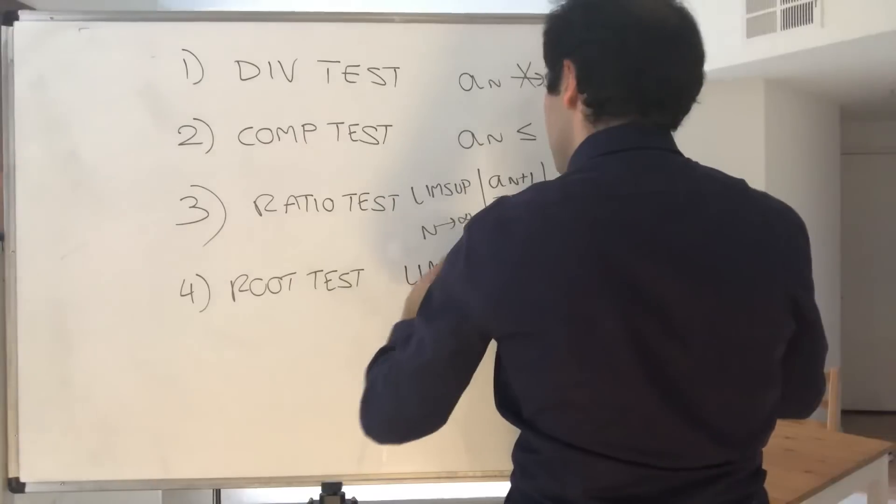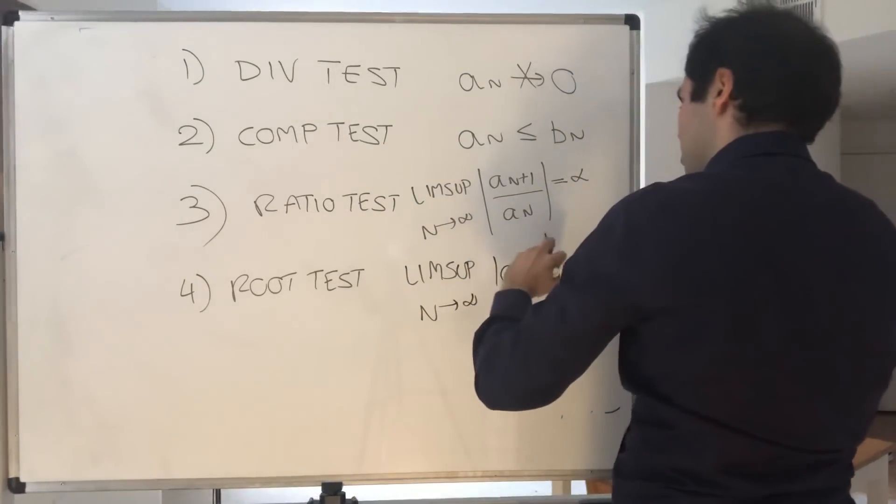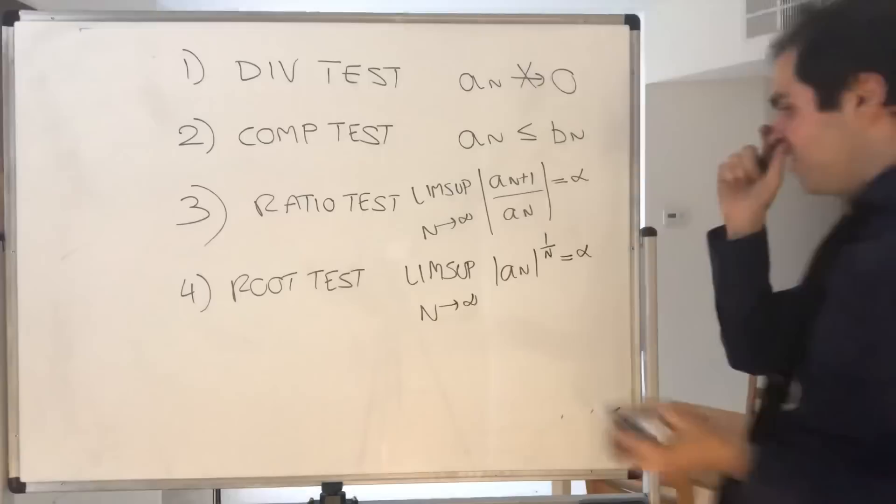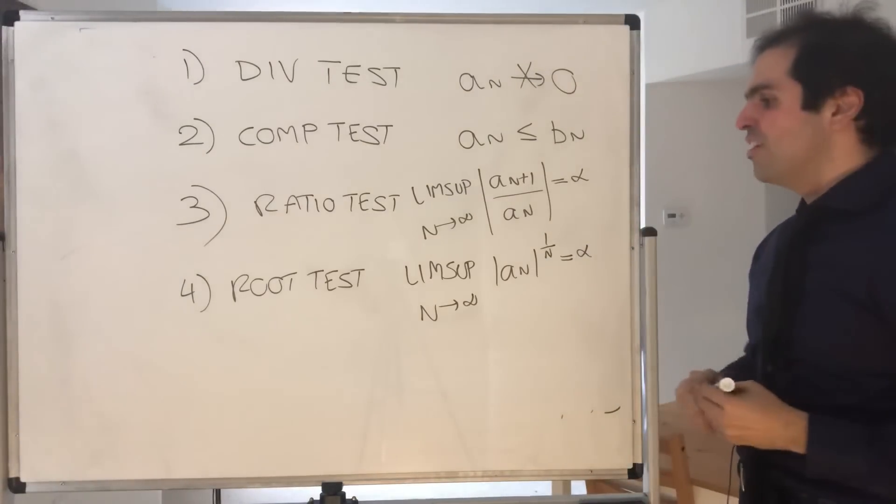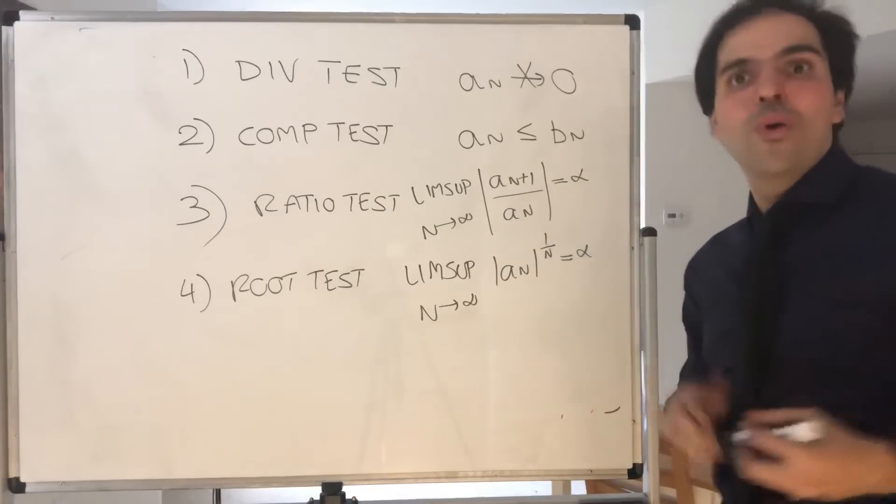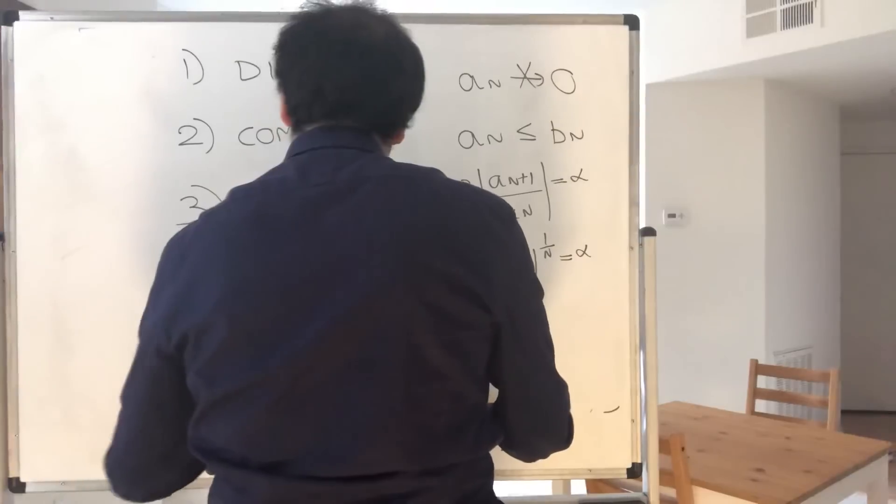And same thing here with limsup as n goes to infinity of the n-th root of a_n. Again, if it's less than 1, it converges. If it's greater than 1, it diverges. Else, we don't know. And again, we take the limsup, because we don't know what the limit is.